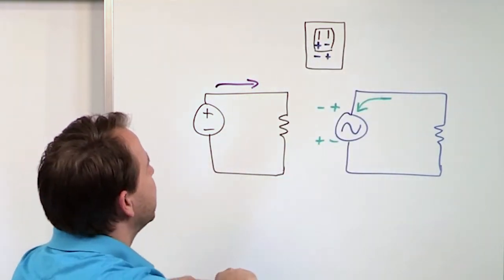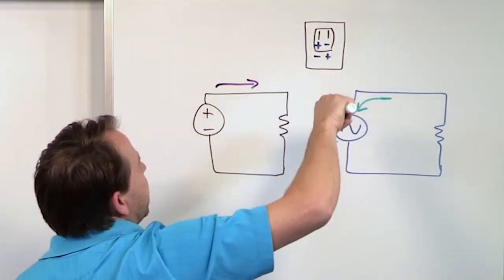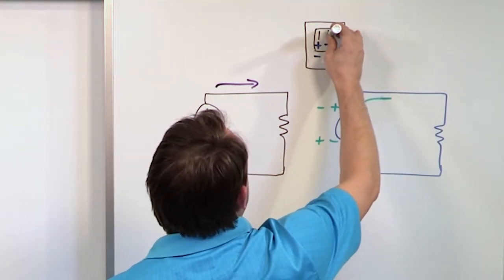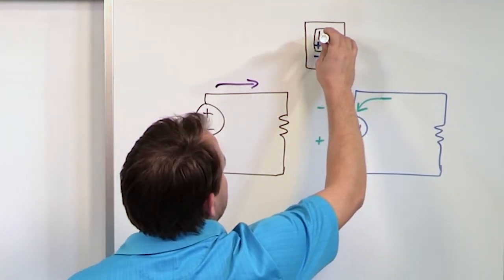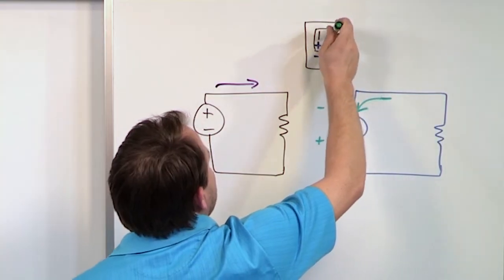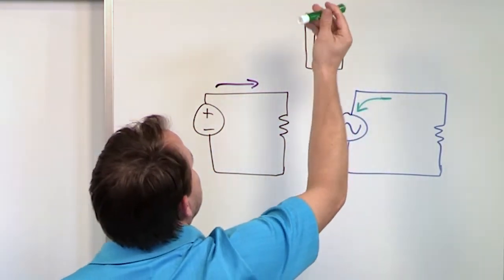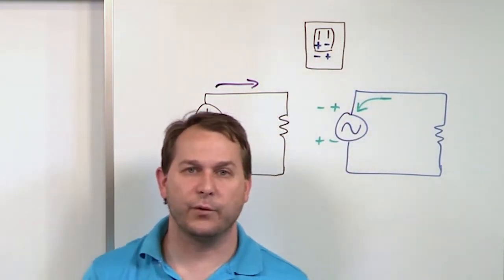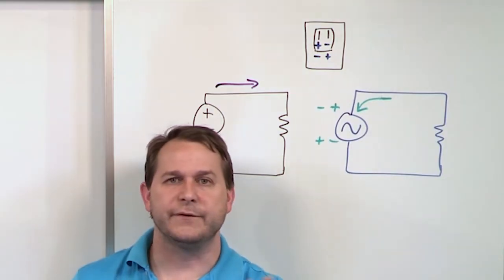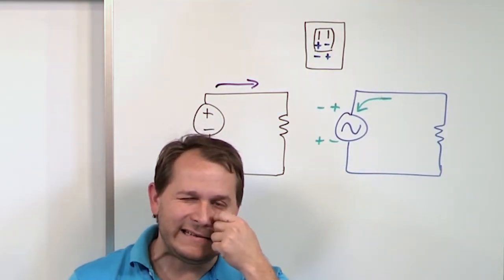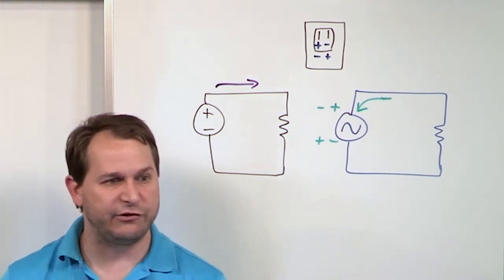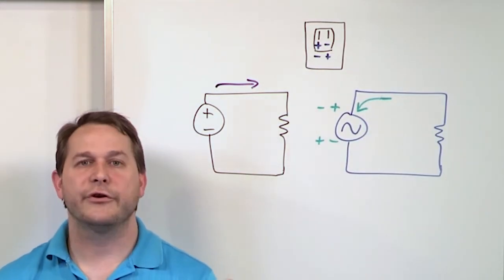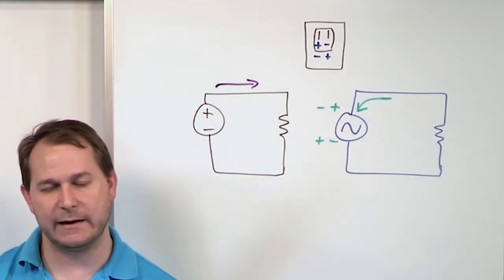Look at that wall socket — visualize it. Pretend you've plugged a vacuum cleaner in. At one instant the current comes out of one prong into your load and back into the other prong; a few milliseconds later everything's flipped and the current goes the other way. The current literally alternates — out to in, out to in — flipping back and forth 60 times per second. The voltage switches direction, and because of Ohm's law the current switches direction also, at the same frequency.